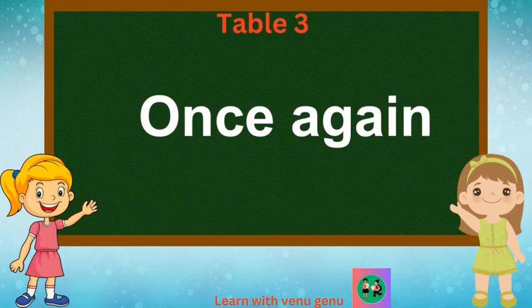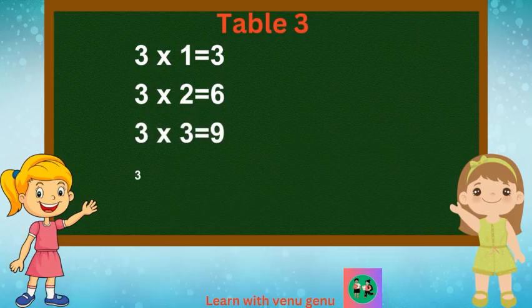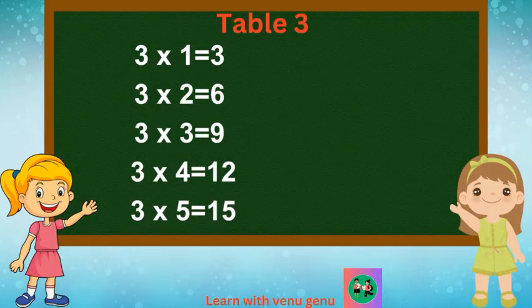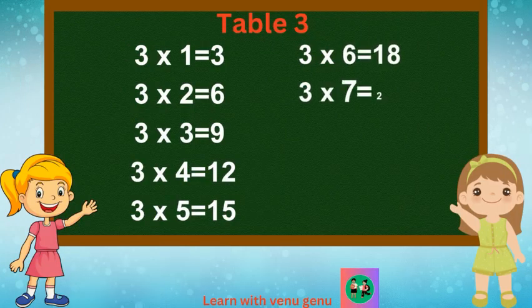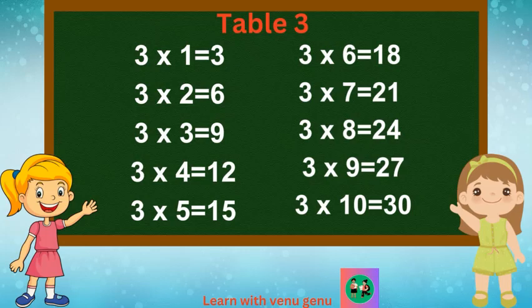Once again: 3 1s are 3, 3 2s are 6, 3 3s are 9, 3 4s are 12, 3 5s are 15. 3 6s are 18, 3 7s are 21, 3 8s are 24, 3 9s are 27, 3 10s are 30.